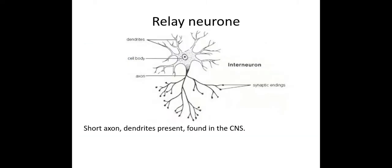The next one we need to know about is the relay neuron. The relay neuron connects the sensory to the motor neuron. This one has never actually been on an exam yet, but we can tell from the images it has a very short axon. It has dendrites present, and this whole neuron is found within the central nervous system, meaning the cell body is also found within the central nervous system. The cell body, as it is a cell, is where the nucleus will be found, along with other components such as the nucleolus.